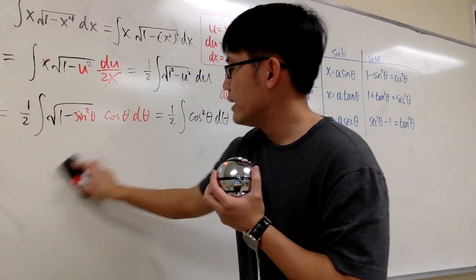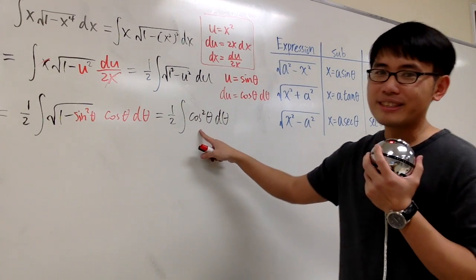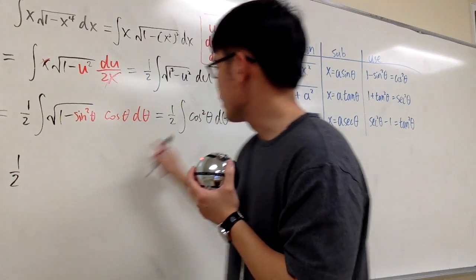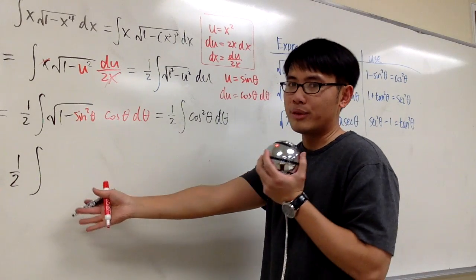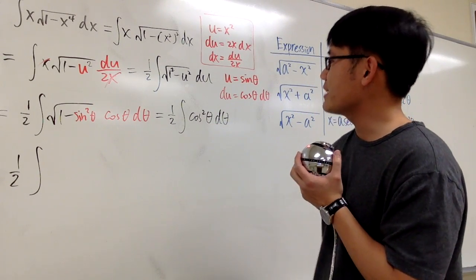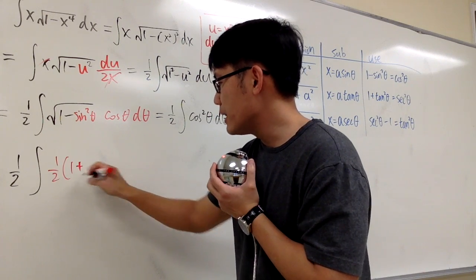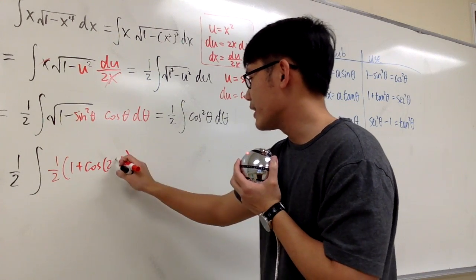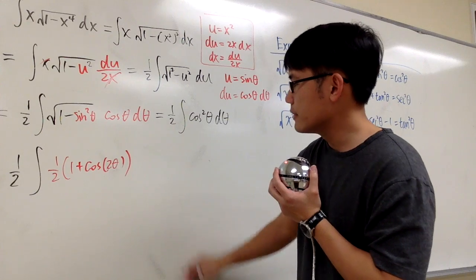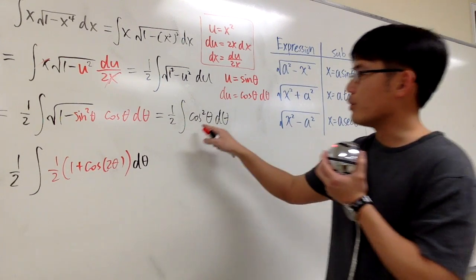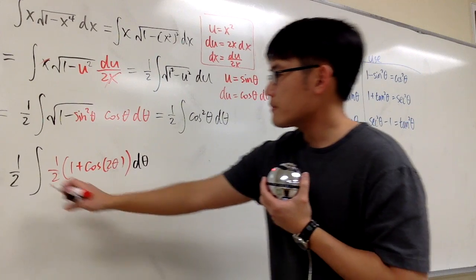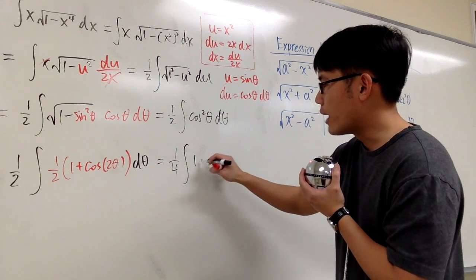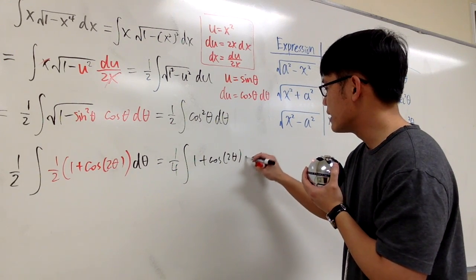Now the question is how to integrate cosine squared theta. The answer is to use the power reduction formula for cosine. The 1 half stays on the outside, and cosine squared is the same as 1 half times (1 plus cosine of 2 theta). So altogether we have 1 over 4 times the integral of (1 plus cosine 2 theta) d theta.